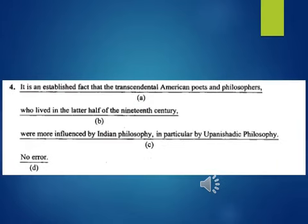Question 4: It is an established fact that the transcendental American poets and philosophers, A, who lived in the latter half of the 19th century, B, were more influenced by Indian philosophy, in particular by Upanishadic philosophy, C, no error, D.